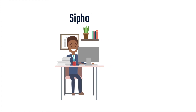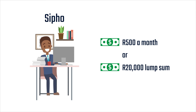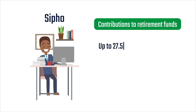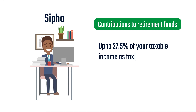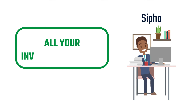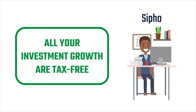Starting a dedicated retirement savings plan will help you save over the long term. You can start from as little as 500 rand a month or a lump sum minimum of 20,000 rand. Investing in an RA is tax efficient. The current legislation allows contributions to retirement funds of up to 27.5% of your taxable income as a tax deduction, subject to a maximum of 350,000 rand in a tax year. All your investment growth, including interest, dividends and capital gains within a retirement annuity, is tax-free.